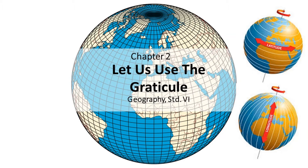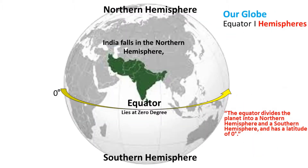Let's see what latitudes and longitudes are. Longitudes are vertical lines connecting the two poles, and latitudes are horizontal lines that are parallel to the equator. The equator is an imaginary line that divides our planet into a northern hemisphere and a southern hemisphere, and has a latitude of zero degrees.